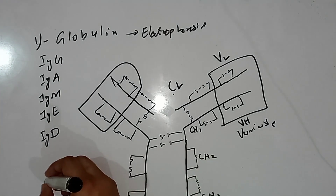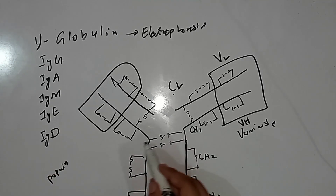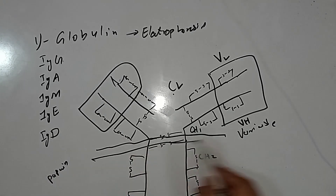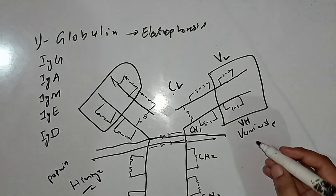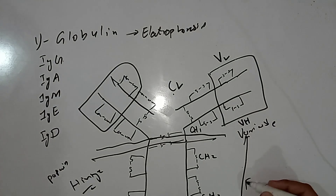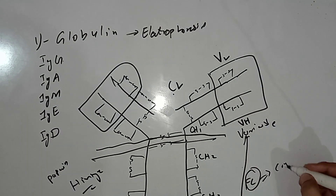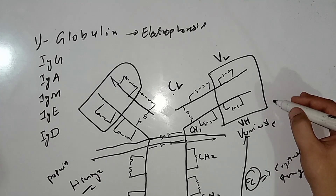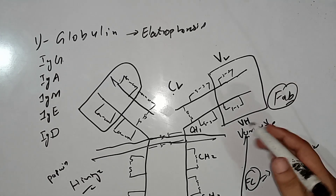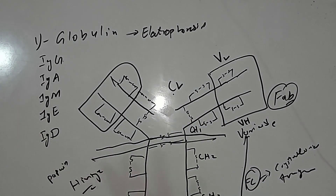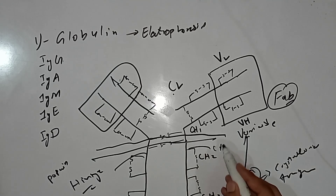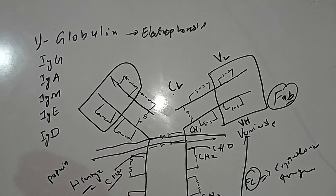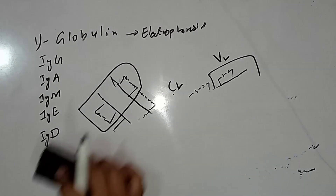Immunoglobulin can be cleaved by the enzyme pepsin, which works at the hinge region. This cleavage produces two segments: the Fc fragment (crystallizable fragment) and the Fab fragment (antigen-binding fragment), which recognizes and binds antigens. The immunoglobulin chains also attach to carbohydrates, making them glycoproteins.